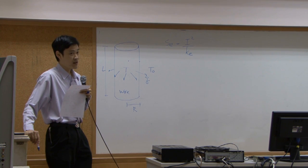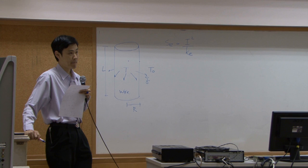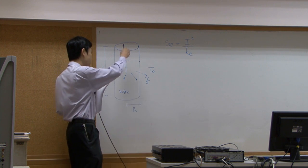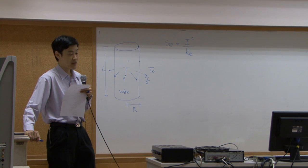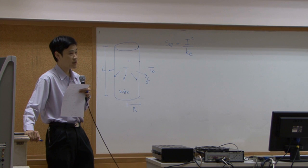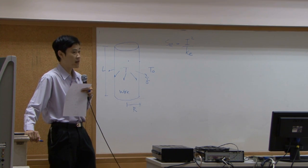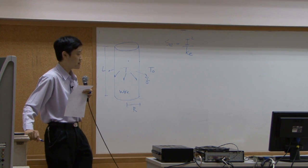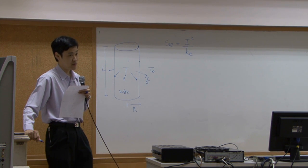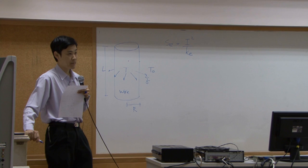Okay. Is there any conduction in Z direction? Now it depends on your assumption. If you assume that temperature along Z direction is uniform, then there will be no conduction in Z direction. And normally when you heat the wire using electricity, the temperature is usually uniform along the length of the wire. So in this case, there is no conduction in Z direction. What about in theta direction? None.